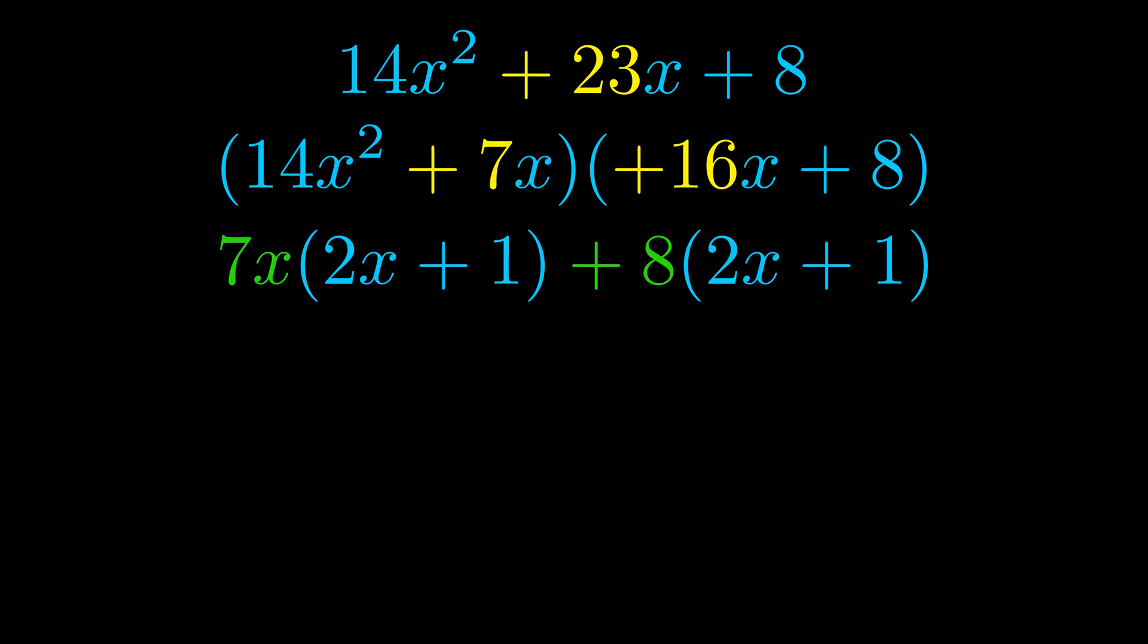Notice also how what remains inside of the parentheses is the same in both cases. The blue values are the same. Those blue values will become one of our factors and we will combine the two green values, the GCFs that we pulled out, to get the other one. And that is our fully factored equation.